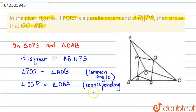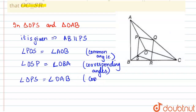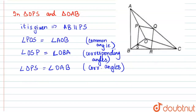We can see that this angle is equal to this angle, and we can write angle OPS is equal to angle OAB — also due to corresponding angles, because the two lines are parallel.